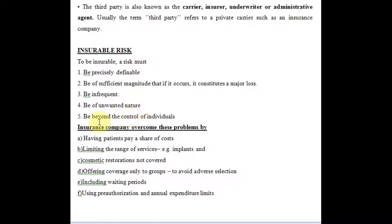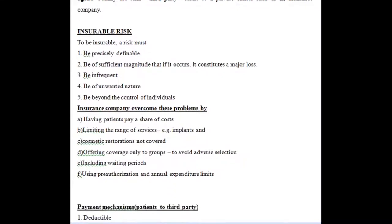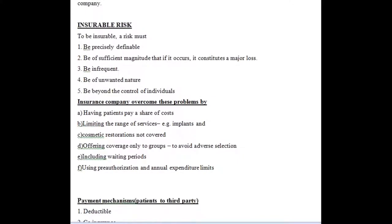The risk should also be beyond the control of the individual, because health is something we can control to an extent. For conditions which are under our control, insurance will generally not be given, or if given, there will be a lot of conditions applied. These are the criteria for insurable risk — defining when a risk can be insured. Health generally violates these principles.